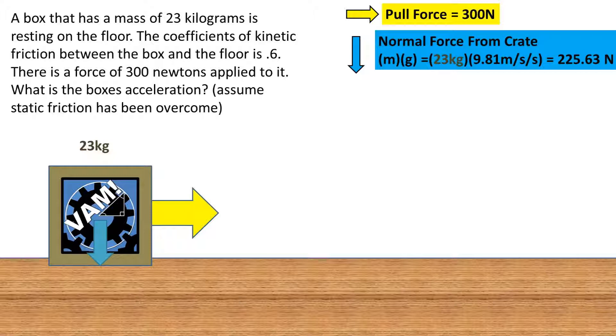Then we have the normal force due to the box, which is marked with the blue arrow. The normal force is the mass times the gravity. Plugging in our numbers, we get a normal force of 225.63 newtons.